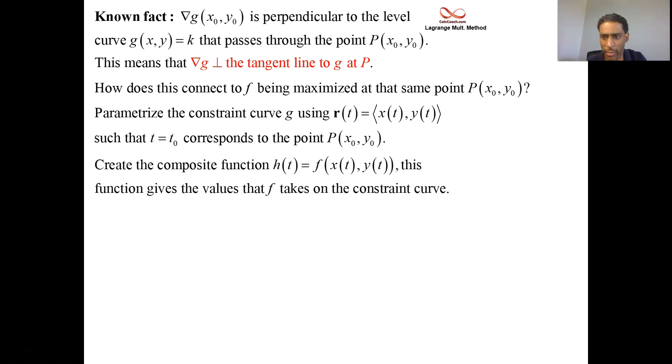Single variable functions are maximized where the derivatives are equal to zero, and so if the function is going to be maximized or minimized, then if f is going to be maximized at that point x₀, y₀, h is the same thing. H then will be maximized at the point t₀, when t = t₀. H'(t₀) = 0 is what we're trying to say here.